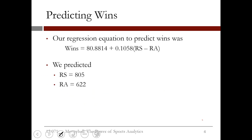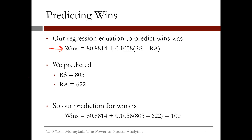We can now make a prediction for how many games they will win. Our regression equation to predict wins is as follows. We predicted 805 runs scored and 622 runs allowed. We can plug in the difference between runs scored and runs allowed to predict that the A's will win 100 games in 2002.